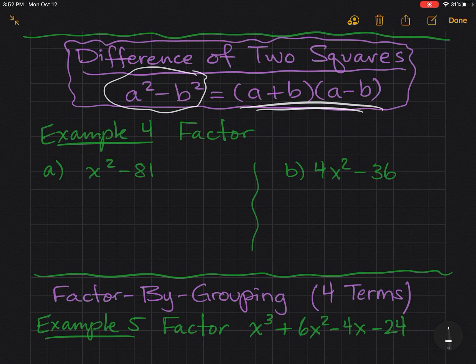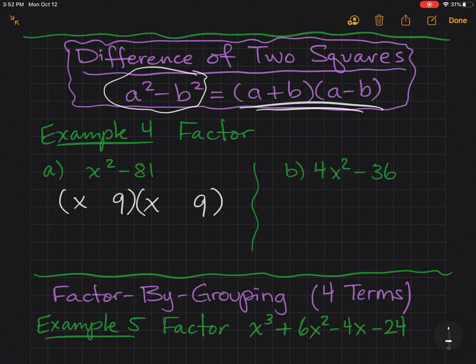First, I'm looking for GCF. There's no GCF. So now I'm going to set up my parentheses. I'm going to take the square root of x squared, which is x. And the square root of 81 is 9. And now I'm going to make one positive, one negative.